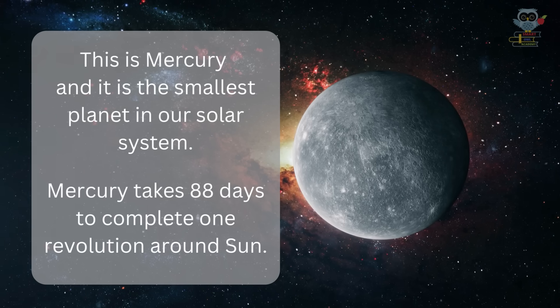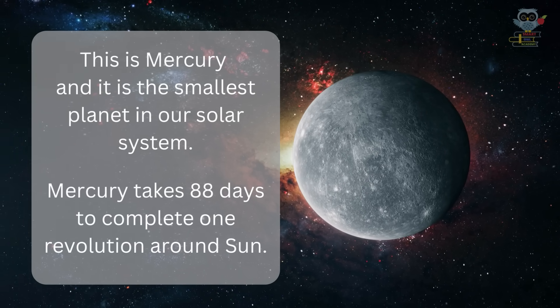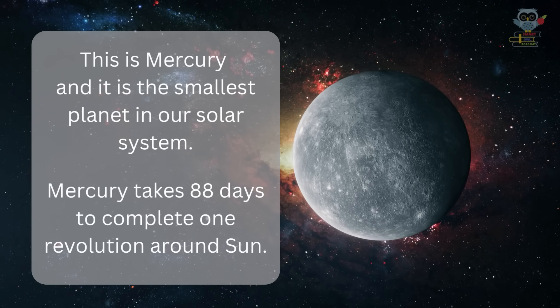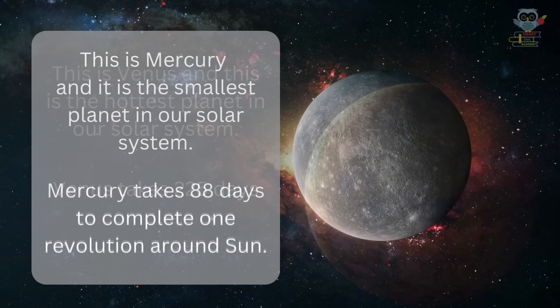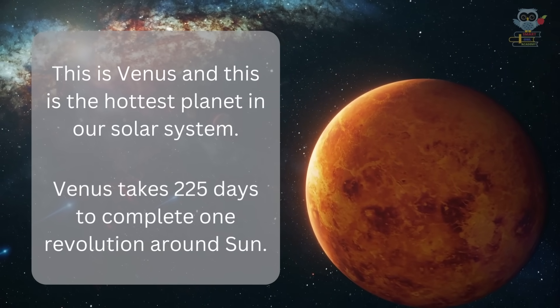This is Mercury, and it's the smallest planet in our solar system. Mercury takes 88 days to complete one revolution around the Sun.